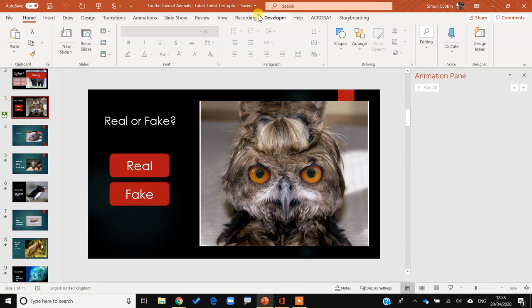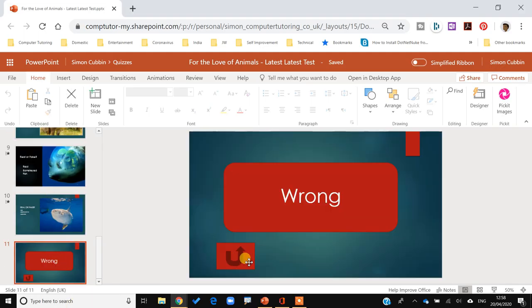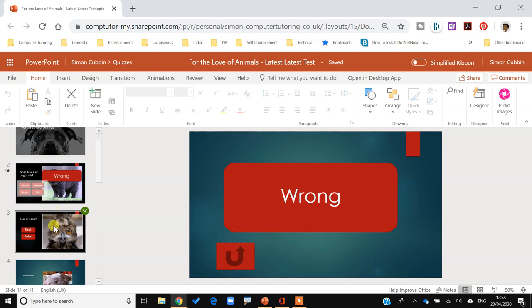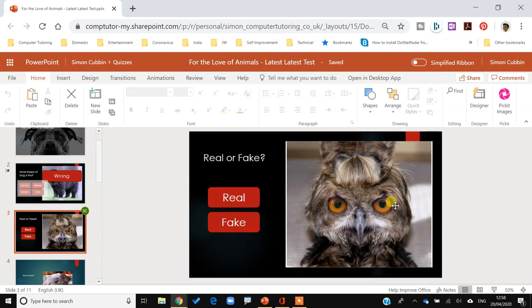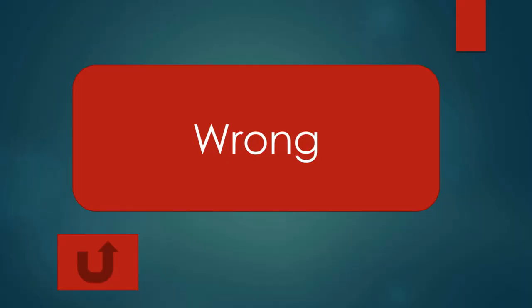Now let's see how it works in the online version. I make sure it's saved — I can see it's saved at the top — then I swap to the online version of PowerPoint. I can test from that slide: click 'real' and it creates a hyperlink going to the 'wrong' slide, but the return button here is not going to work — it's ending the slideshow because it's the last slide, so that doesn't work.